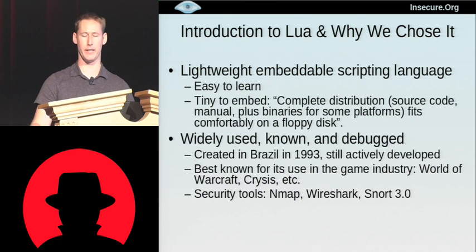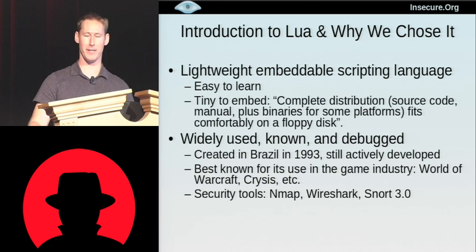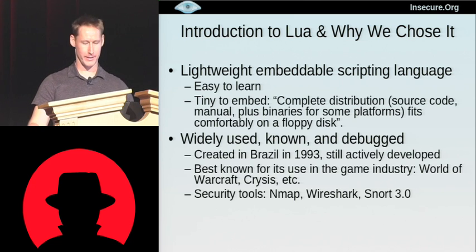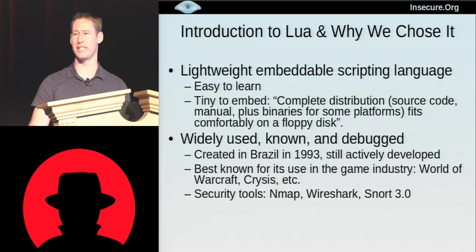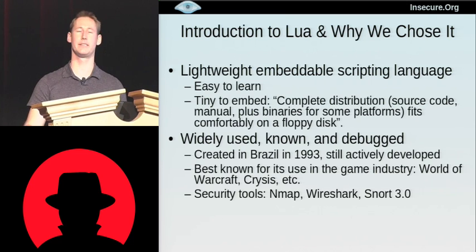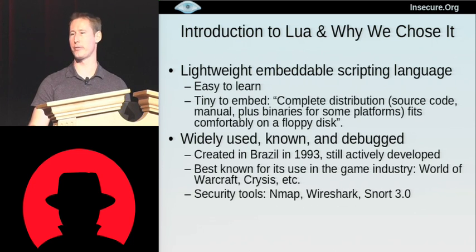It's tiny to embed. The book says that the complete distribution — source code, manual, plus binary for some platforms — all fits comfortably on a floppy disk. For those of the young people in the audience, a floppy disk is sort of... kind of between punch cards and flash drives in the technology range. Being small is very important to us because we don't want to bloat Nmap downloads with some gigantic language. It was created in 1993 and is still actively developed, so we knew it had a good track record.